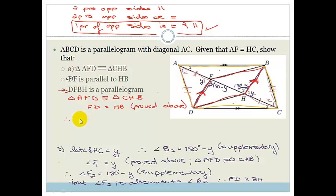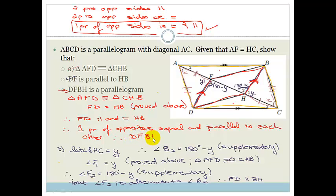Therefore, we have that FD is parallel and equal to HB. Therefore, we've got one pair of opposite sides that are both equal and parallel to each other. And therefore, we can say that D, F, B, H is a parallelogram.